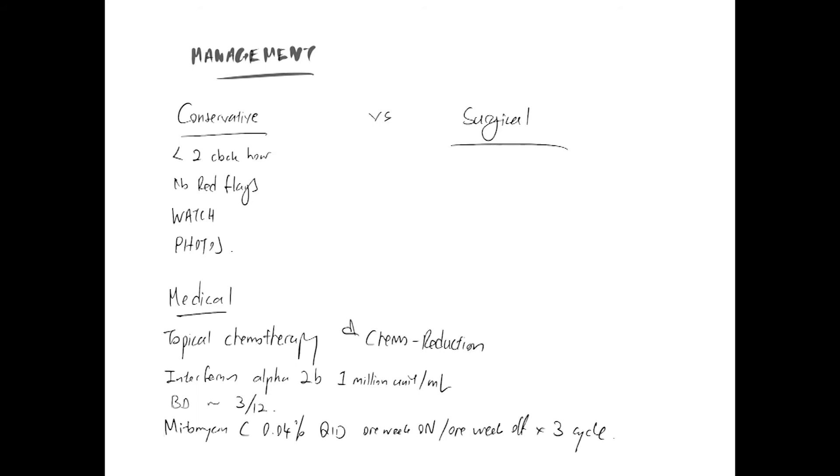If the lesion is huge or patient is not suitable for surgery, chemoreduction is an option using interferon alpha 2b, mitomycin C, or even 5FU. The treatment regime is as follows: normally we do two to four times a day, classically four times a day if patients can tolerate. Interferon you might do it for at least two to three months, whereas mitomycin C for three cycles, one week on and one week off.